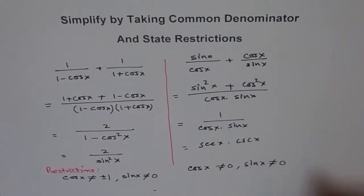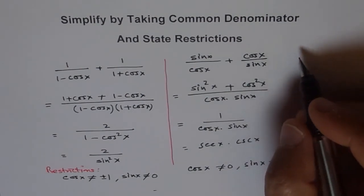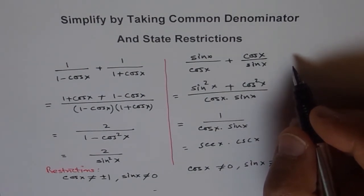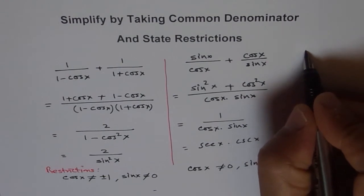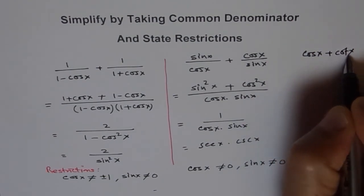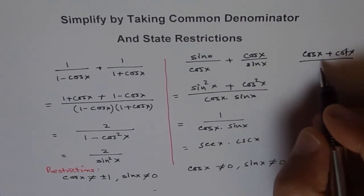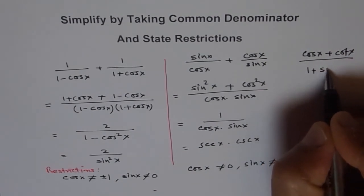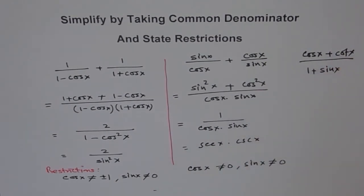You can try one to write restrictions. You can try this. We can give you an expression like cos x plus cot x divided by 1 plus sin x. Try to simplify this and see what you get. And then state your restrictions.